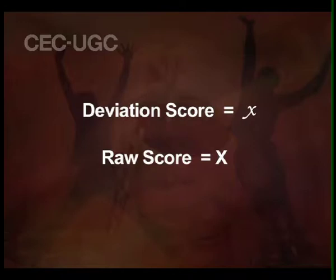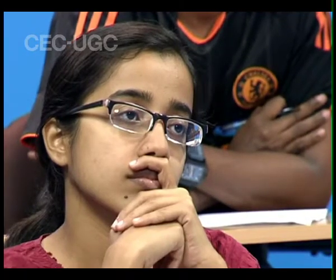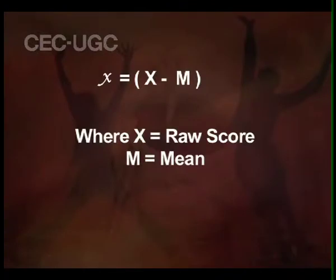When we take the deviation score, small x is called the deviation score. The score above the mean is called the positive score and the score below the mean is called the negative score. We subtract the mean from the raw score to get the deviation score.